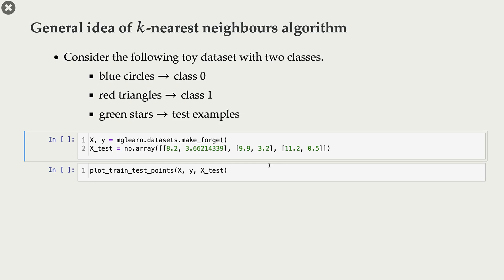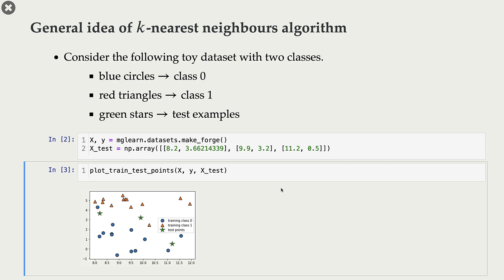Now before we look into the details, I want to give you a general idea of one of the most popular analogy-based algorithms called k-nearest neighbors, so that you have a general idea of where we are going. Here is the idea: first I'm creating some dataset, and here is how our dataset looks. These orange points are the points with class one and blue points are the points with class zero.